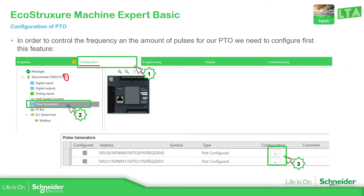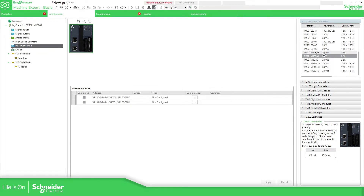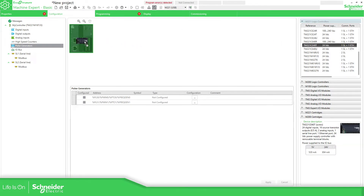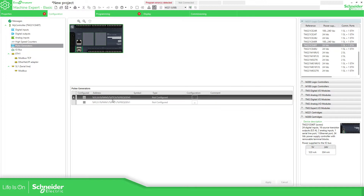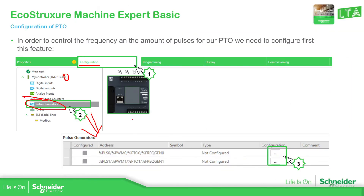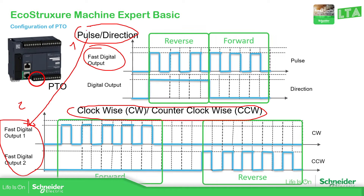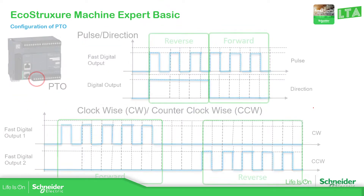Going back to the presentation: once you have the transistor output controller, you should be able to see the pulse configuration option. Depending on the controller, you have up to two PTOs. When we select the PTO output, it gives us the two options: pulse direction, or clockwise/counterclockwise. Bear in mind that with clockwise/counterclockwise, you consume both PTOs for one axis.